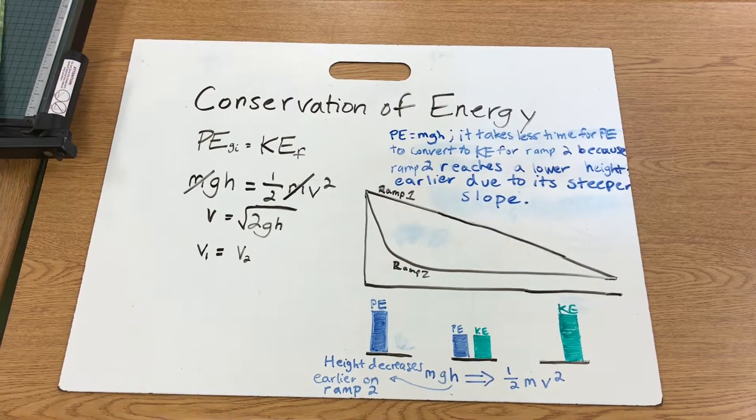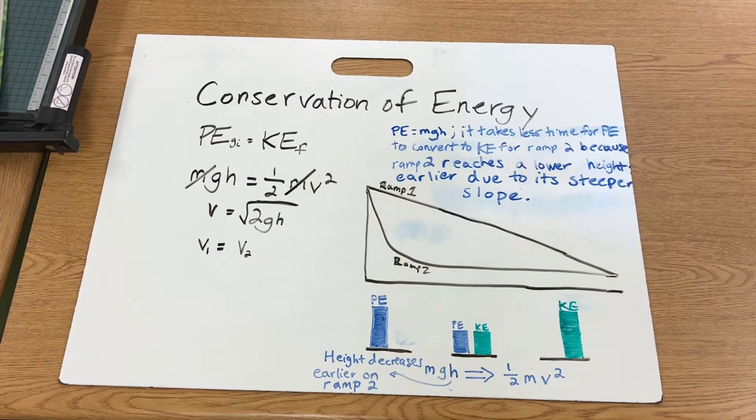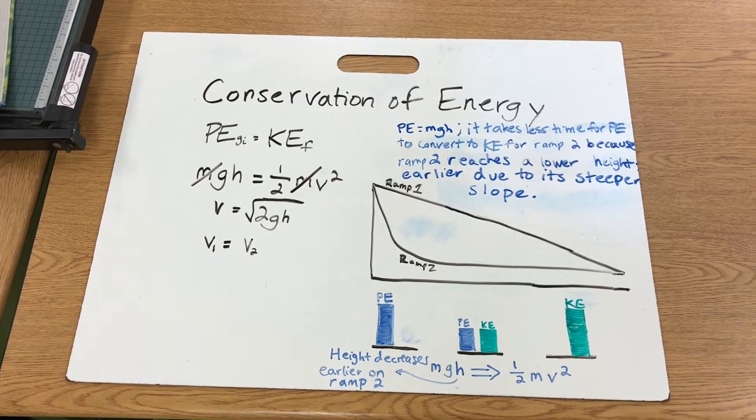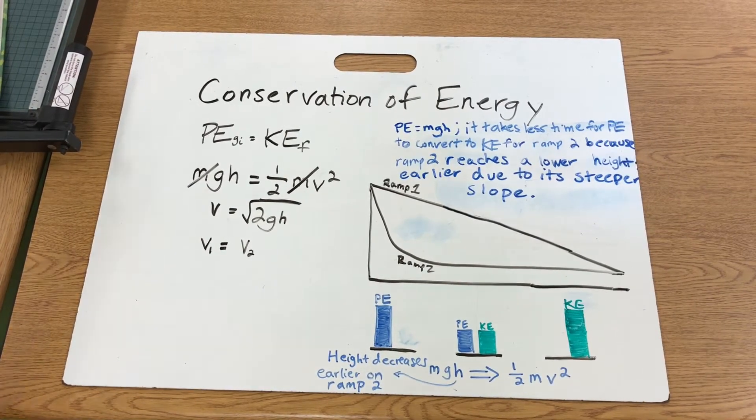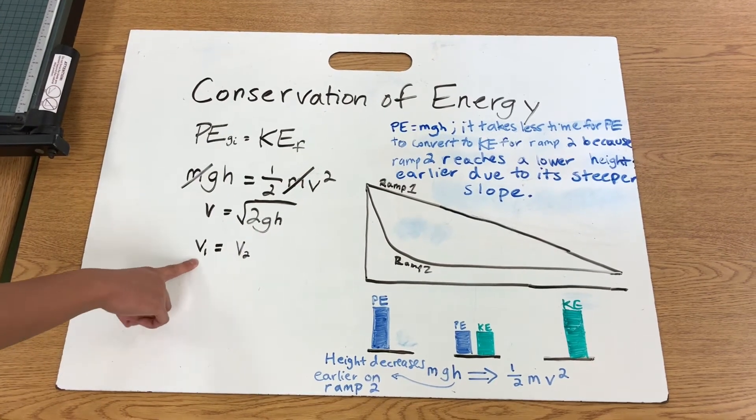The ball is able to accelerate earlier and reach its maximum velocity in less time. Consequently, the second ball is traveling faster for the whole trip and distance is the same, so the second ball will reach the bottom first, even though the final velocities are going to be the same.